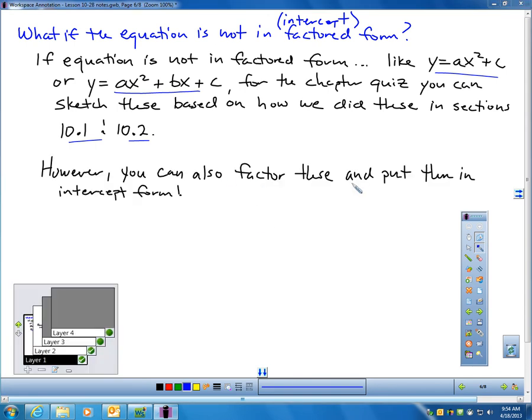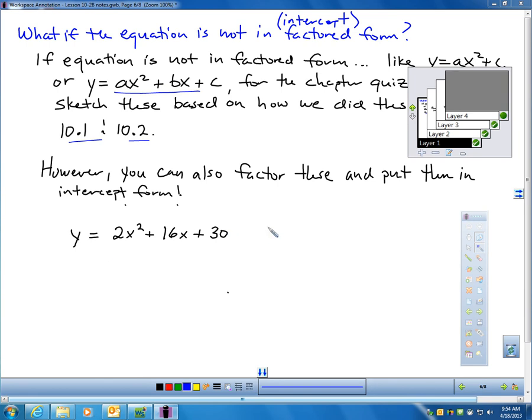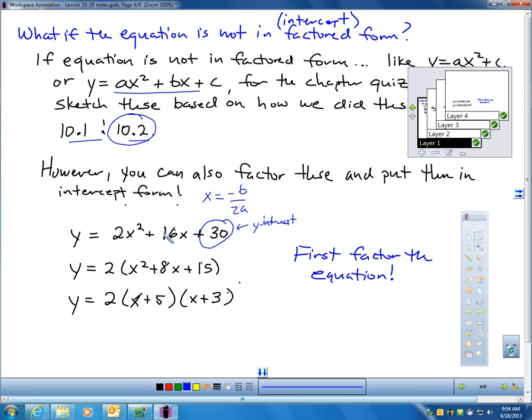However, if you'd like, you could factor them and graph them in intercept form also, and I'd be fine with that. Like, if you look at this problem, I could do this problem in two ways. I could do it like we did in 10.2, which would have been to take X equals negative B over 2A, get the axis of symmetry, find the vertex, and here's my Y intercept right there. That would give me one point, and I could mirror that point. Or I could factor this real quick, divide everything by 2. I know 5 times 3 is 15, and 5 plus 3 is 8. Factor the equation first, and now do you notice this is in intercept form. Let's graph it now.